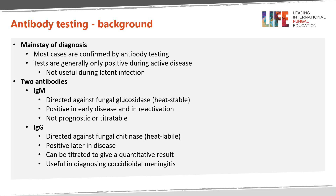Serology with antibody testing remains the mainstay of diagnosis, and that's how most cases are defined and confirmed. Tests are generally only positive during active disease and are not useful during latent infection. Two antibodies are found: the IgM, directed against a fungal glucosidase which is heat stable, is positive in early disease and occasionally in reactivation, but is not prognostic nor titratable. IgG is directed against fungal chitinase and is heat labile. It is positive a few weeks after the IgM, can be titrated to give a quantitative result, and is therefore used for prognostication. It is also useful in diagnosing coccidioidal meningitis.